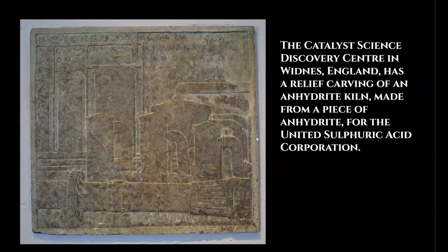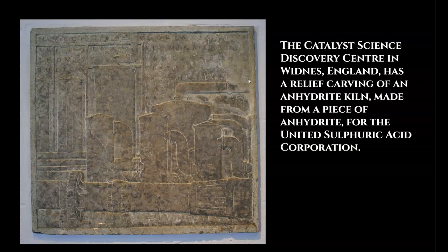Here is a side note I stumbled across in my research. This image of a calcium sulfate anhydrite kiln, as described at the Catalyst Science Discovery Center in Widnes, England, has a relief carving of an anhydrite kiln made from a piece of anhydrite for the United Sulfuric Acid Corporation. The Catalyst Science Discovery Center and the United Sulfuric Acid Corporation — any of this sounding familiar? It definitely should be. The never-ending series of coincidences that have presented themselves on my journey never cease to amaze me, and we will be coming back to this in just a moment.